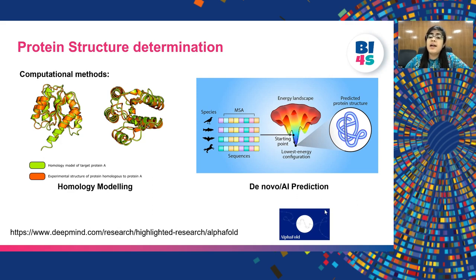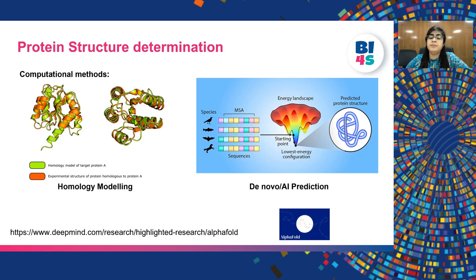Next is AlphaFold, a tool that has come recently. It uses AI-based techniques to predict the structure of any protein. The tool has been trained on previously known 100,000 protein structures and uses that information to predict the structure for any new protein given to it.